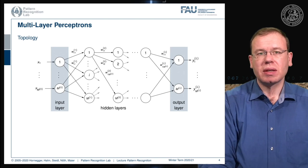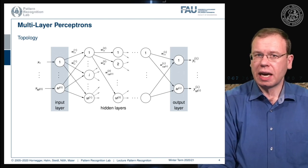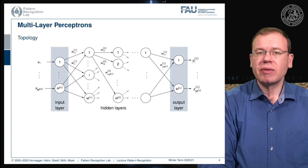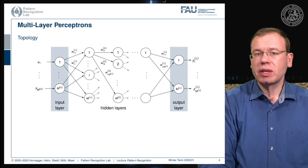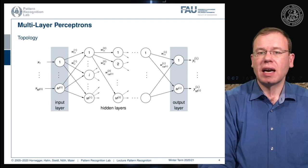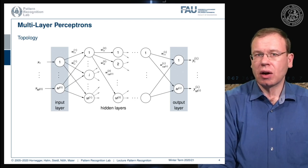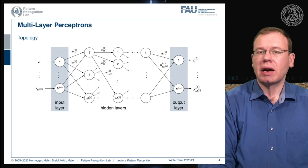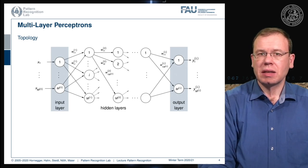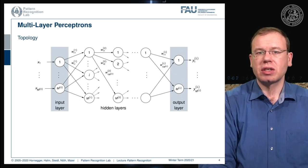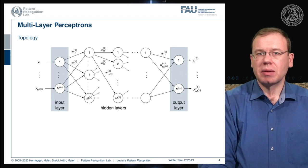We have hidden layers. They're hidden because we cannot directly observe what is happening in them — we can only compute their values if we know the weights and the input. We can only observe the output at the very end. That observable output is compared to a desired output, which allows us to construct a training procedure.